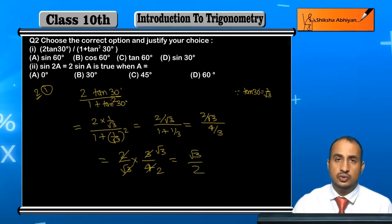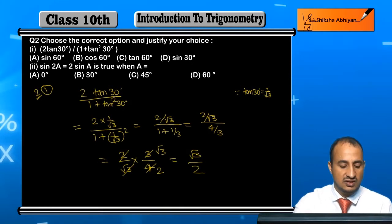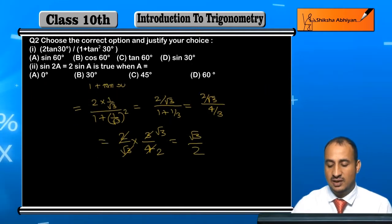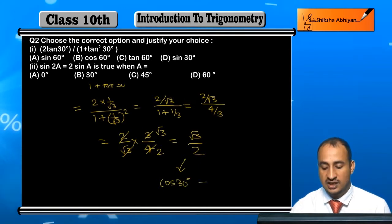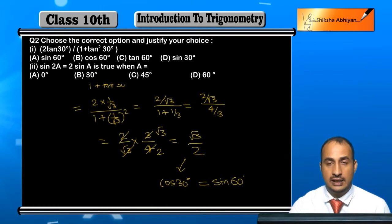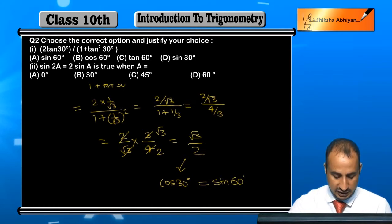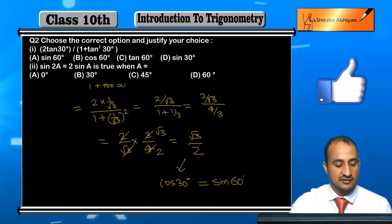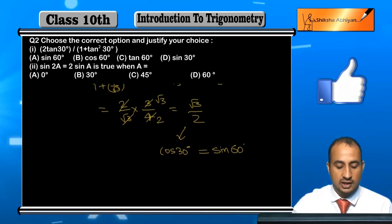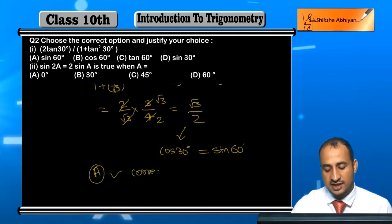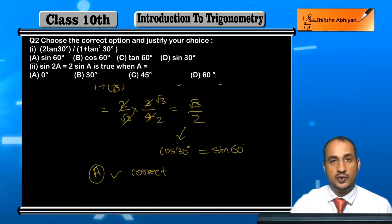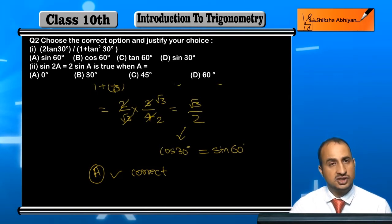Now √3/2 किसकी value होती है? cos30° की value भी √3/2 होती है और sin60° की value भी √3/2 ही होती है। Looking at the options, sin60° is given, so option A is correct. Option A is correct, and the explanation has been given above.